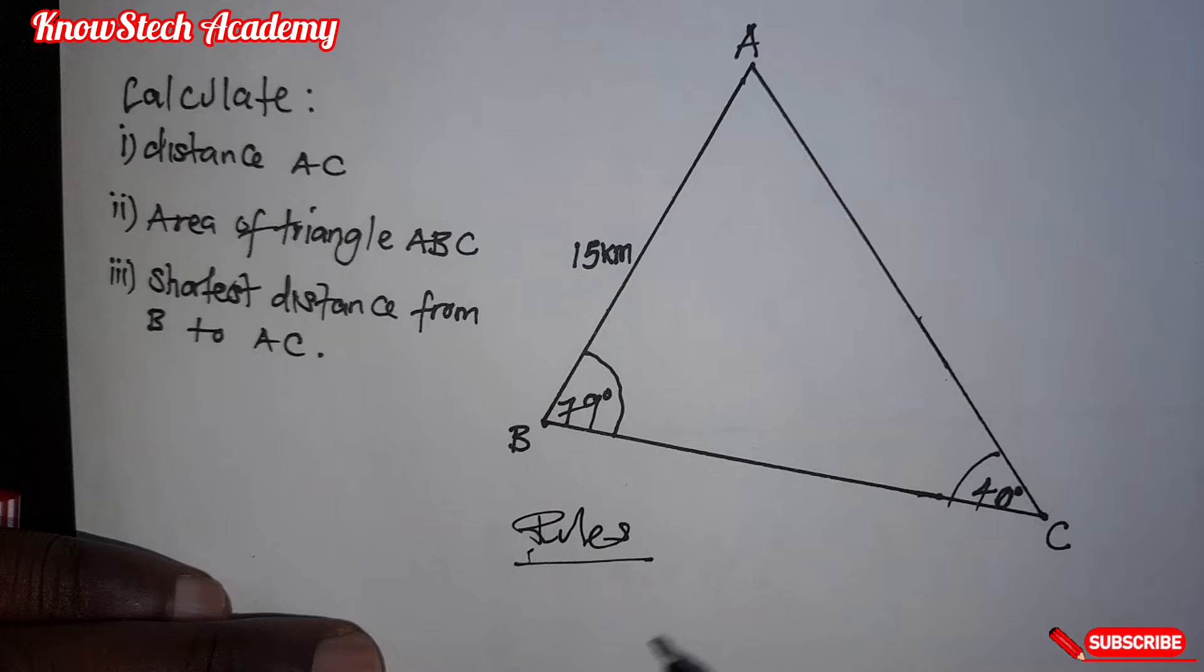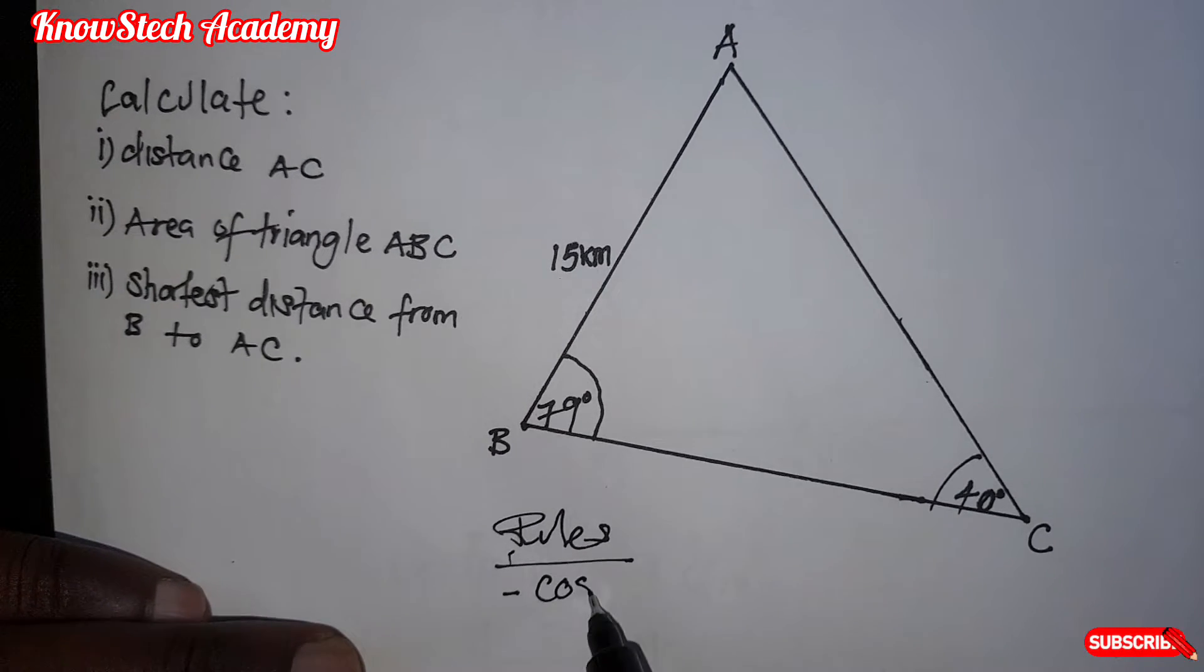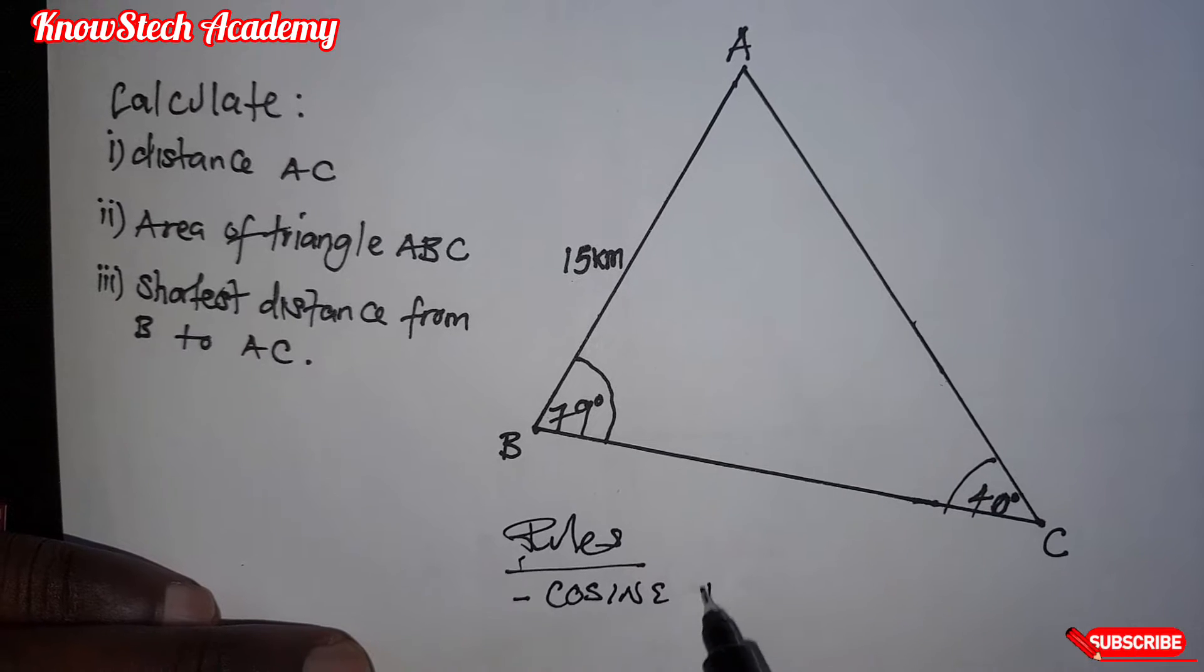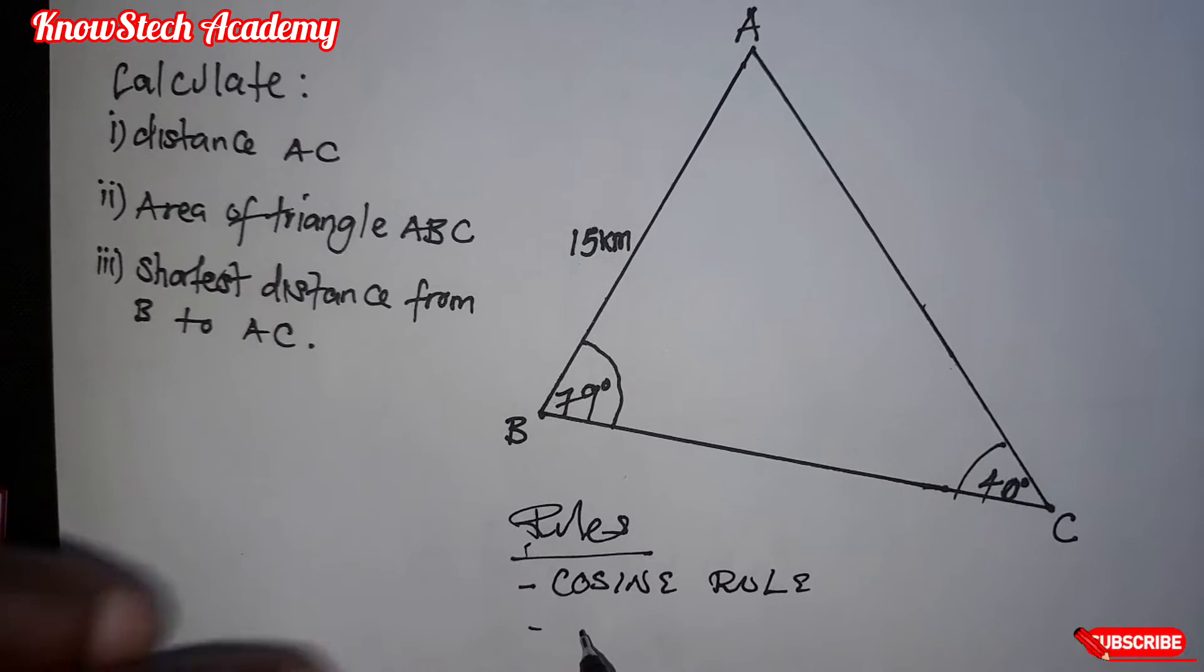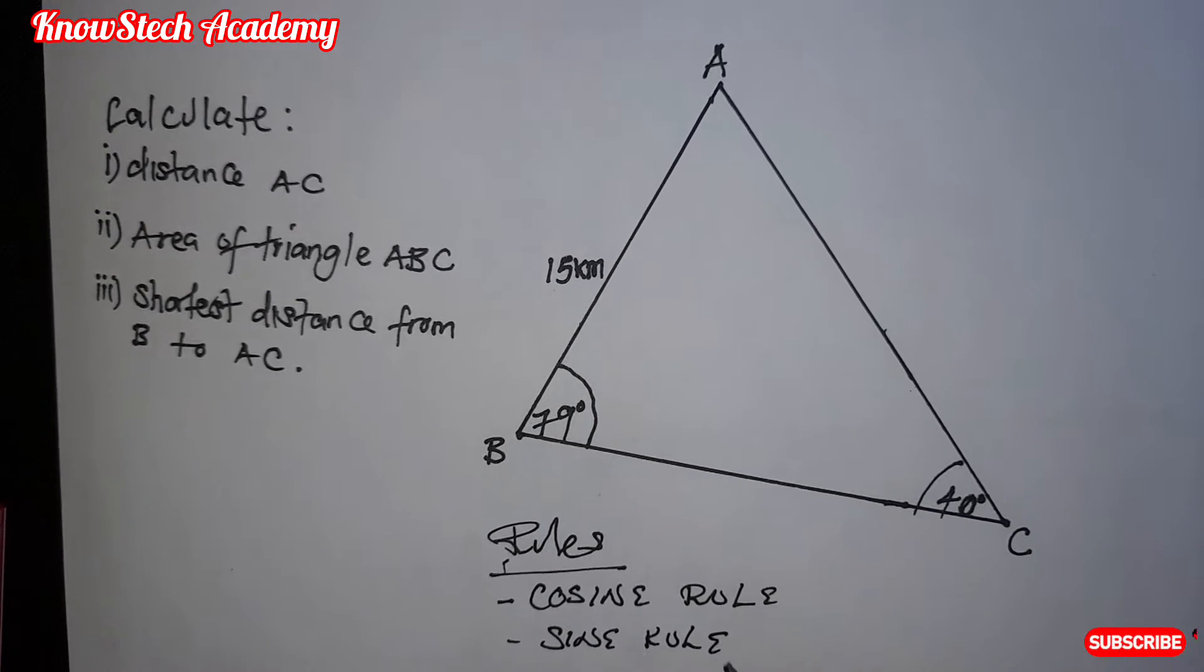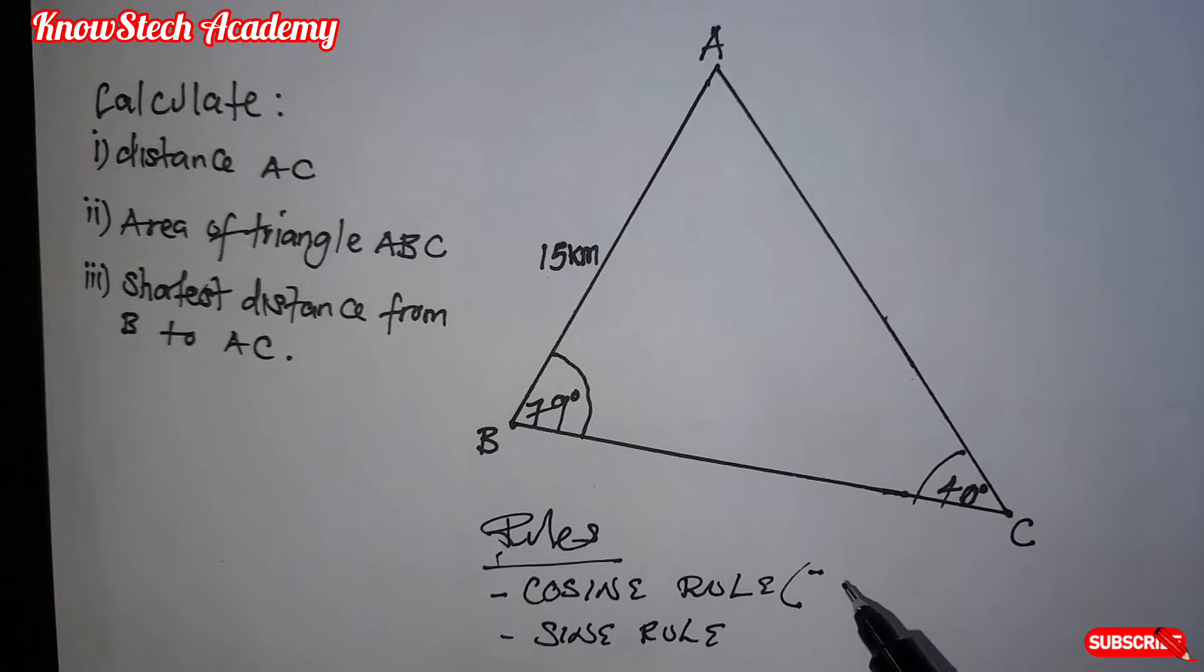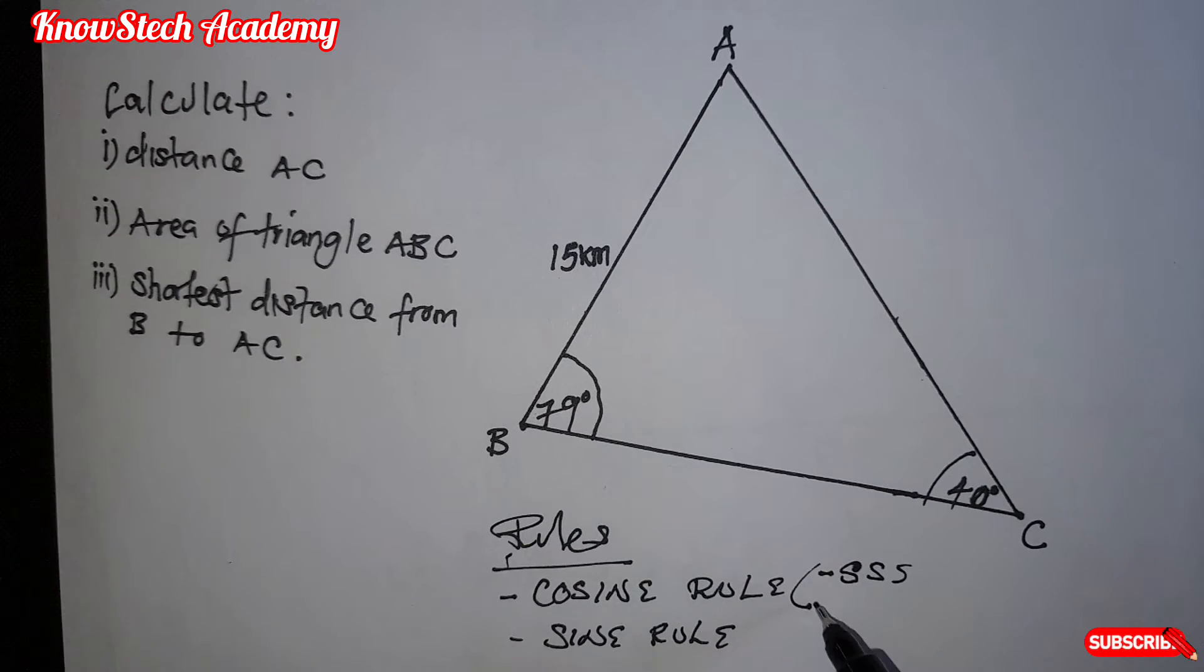If it's a non-right-angled triangle, we have two rules. We have what we call the cosine rule and the sine rule. Now, this cosine rule is applicable when you are given all the three sides: side, side, side.